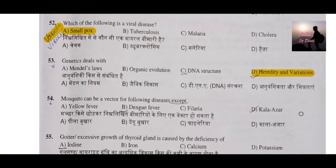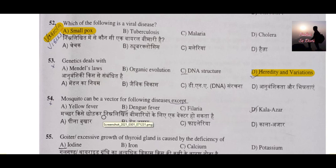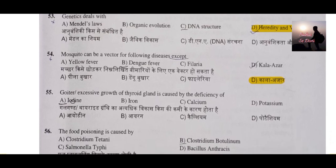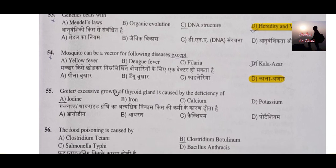Question number 54: Mosquito can be a vector for the following diseases except which one? The correct answer is kala azar. Yellow fever, dengue fever, and filaria — mosquitoes act as a vector for all three, but for kala azar, mosquitoes do not act as a vector. Question number 55: Goiter, or excessive growth of the thyroid gland, is caused by the deficiency of which element?